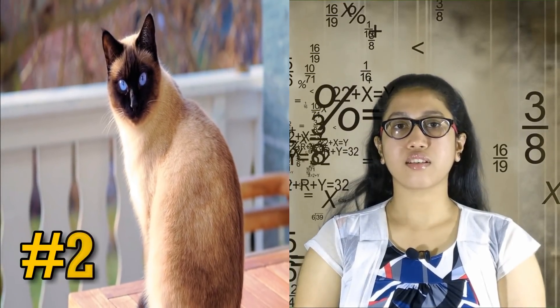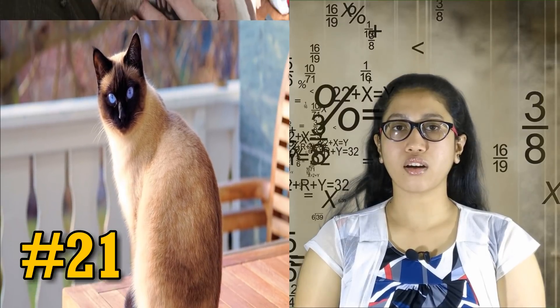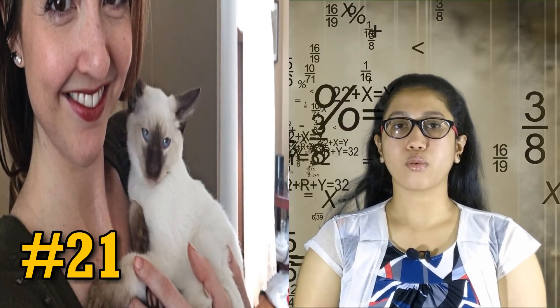Siamese cats are temperature sensitive albinos which cause cooler body parts to be darker and warmer parts to be lighter. As they get older, their body temperature decreases and overall color darkens.